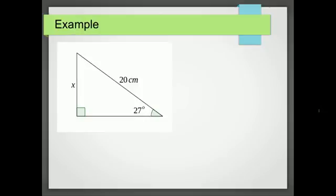Okay, so here's an example problem. So the first thing we have to do is label the side that we've got, and label the side that we're trying to find out. So we have the hypotenuse, and we're trying to find out the opposite. We then write down the ratio that's associated with hypotenuse and opposite, and that's sine.